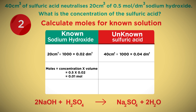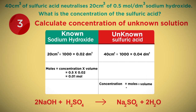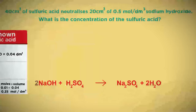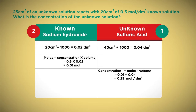Now calculate the concentration of the unknown solution. The concentration of sulfuric acid equals 0.01 divided by 0.04, which equals 0.25 mole per cubic decimetre. But from the equation we know that two moles of sodium hydroxide reacts with one mole of sulfuric acid, so 0.25 assumes a one-to-one ratio. We need to divide by two to get the concentration for one mole of sulfuric acid: 0.25 divided by 2 equals 0.125.